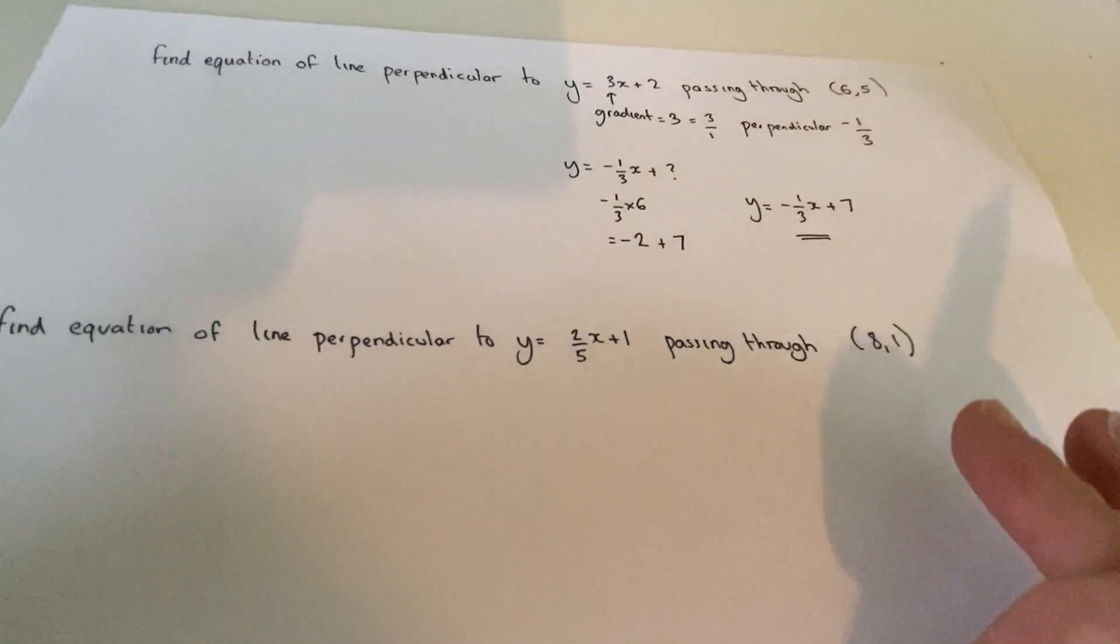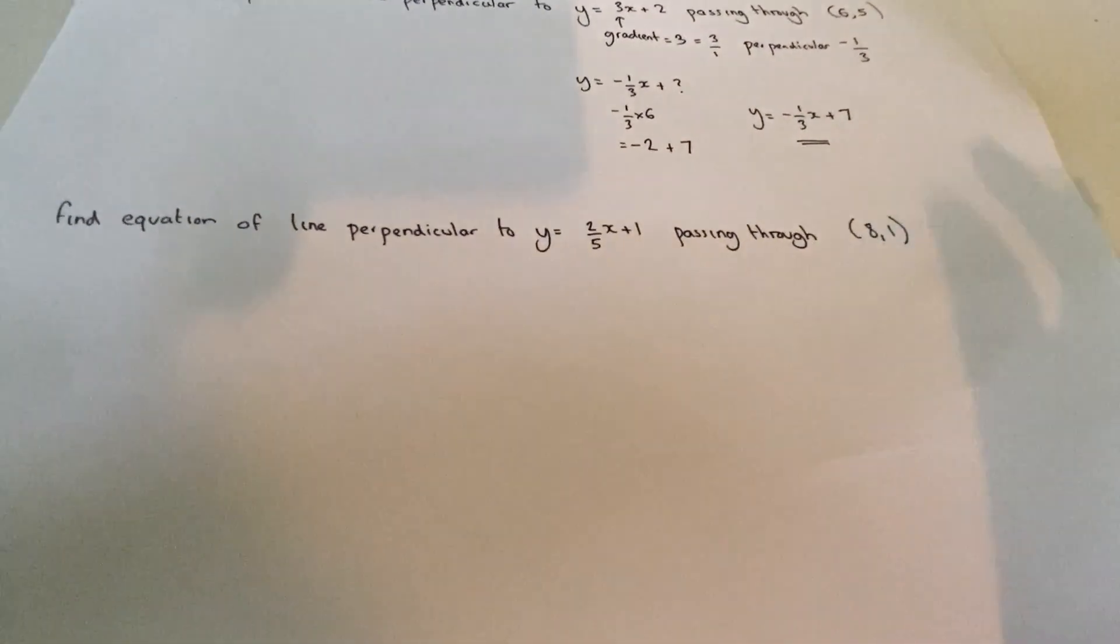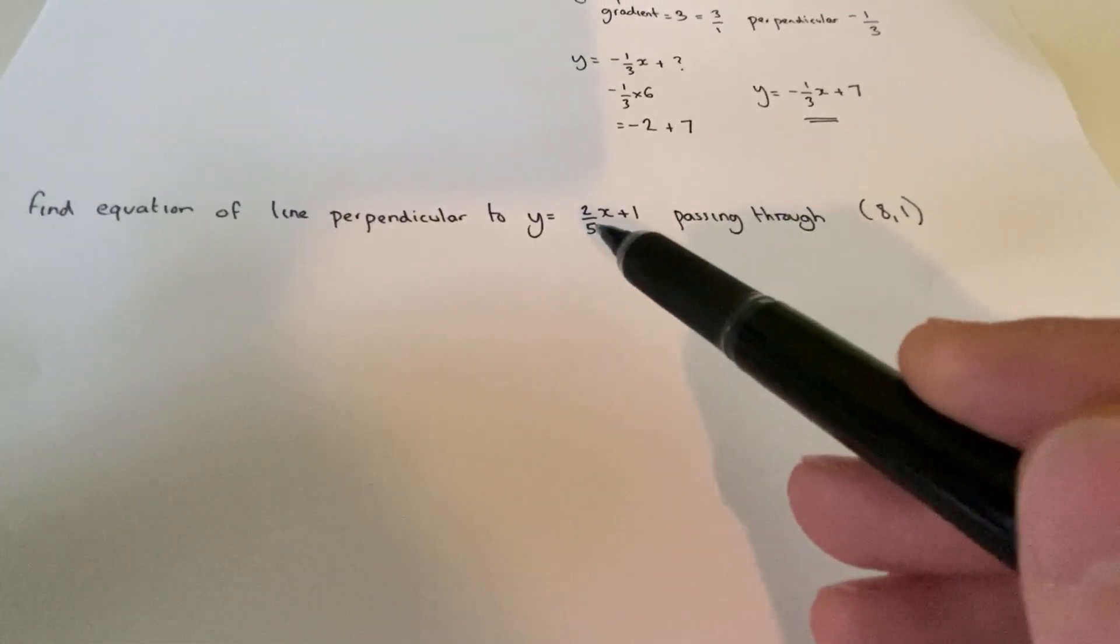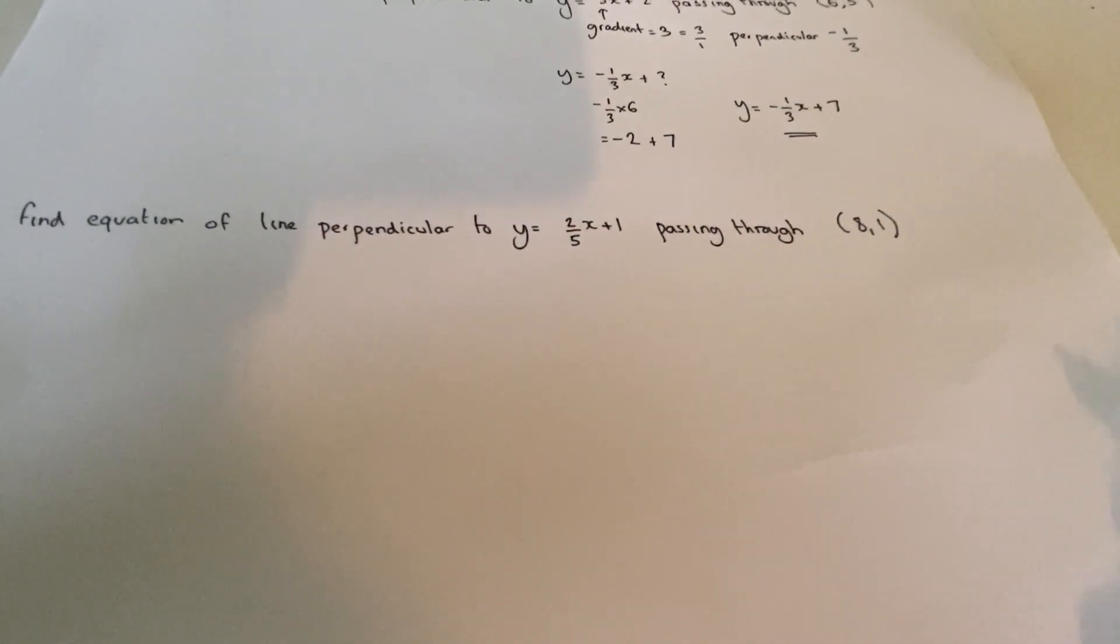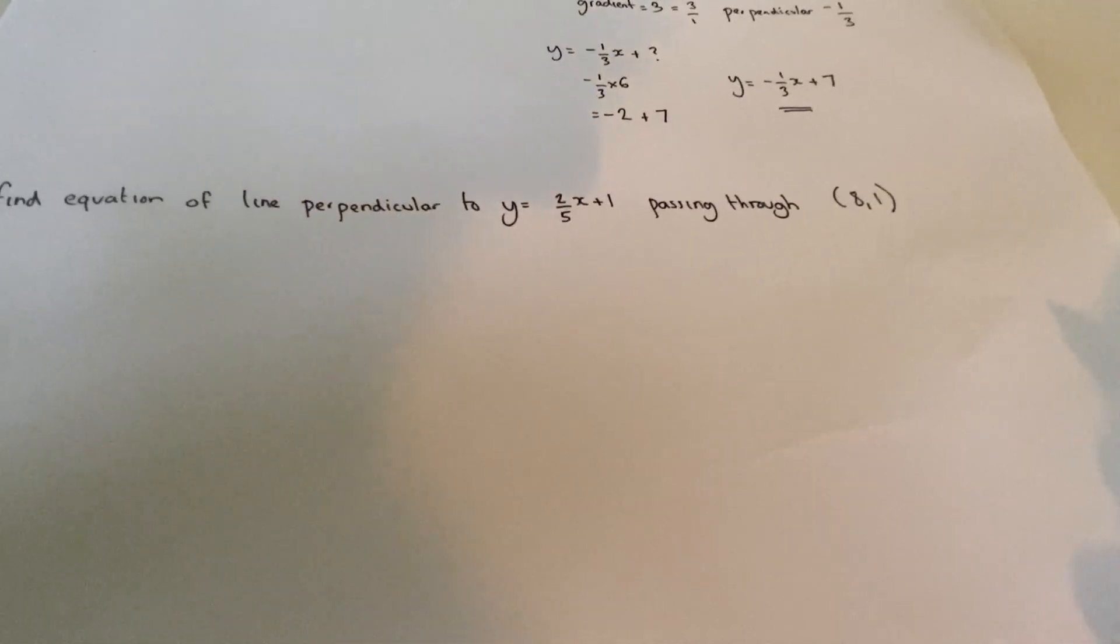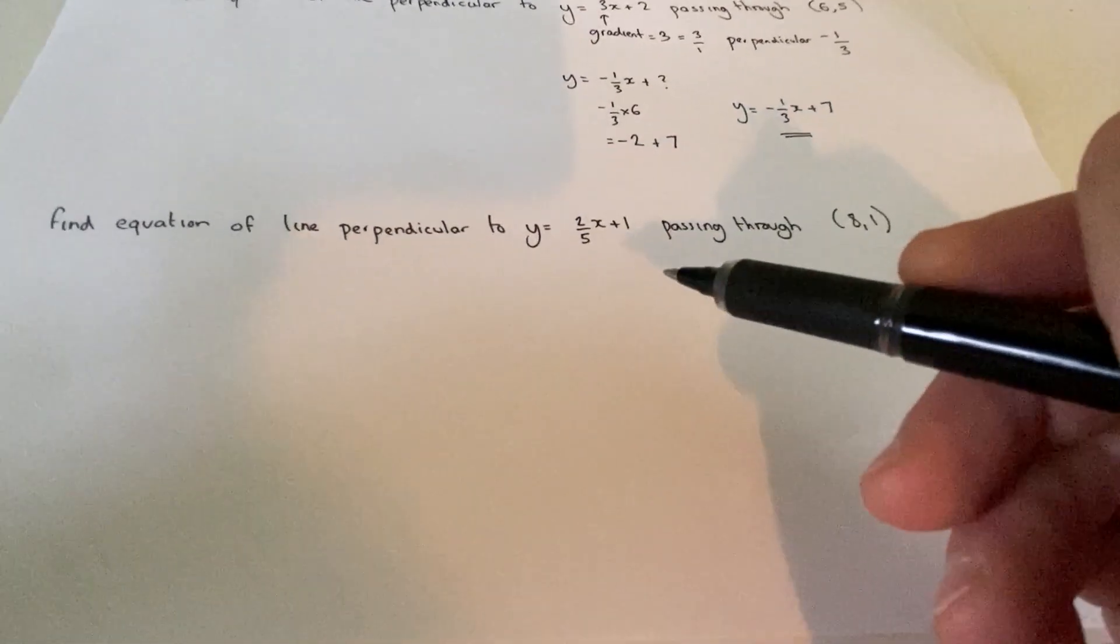Now in the second example, the maths is almost identical. But the original gradient is or looks a bit more complicated. But the maths is identical. Now for the original gradient, it was 2 fifths.